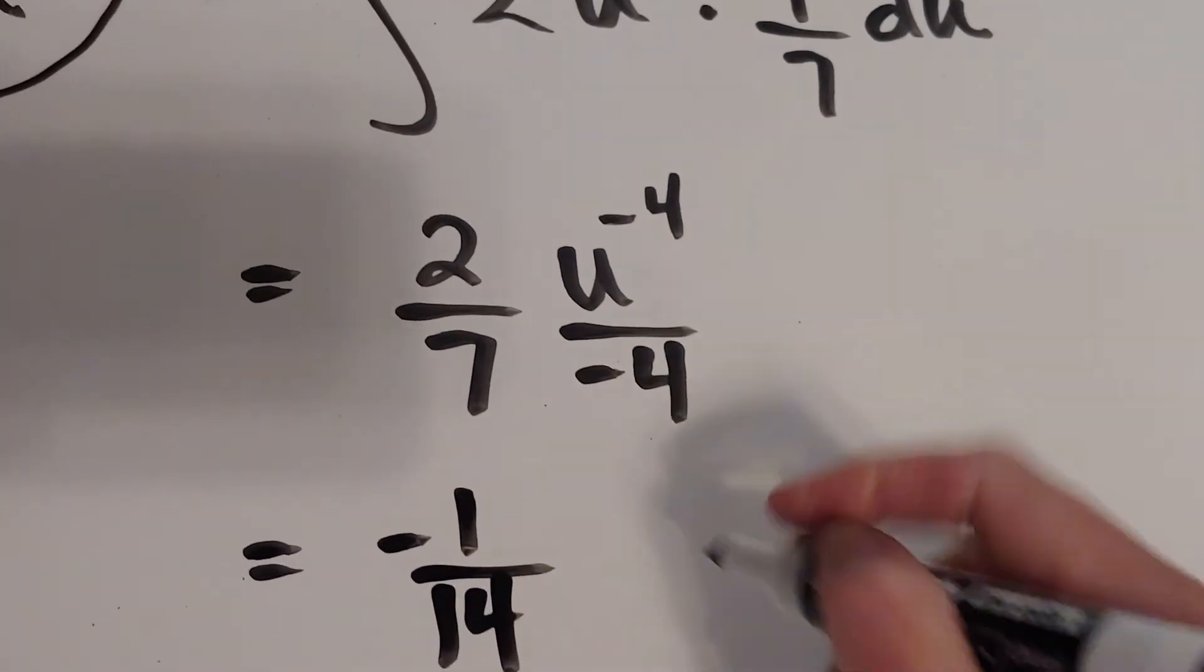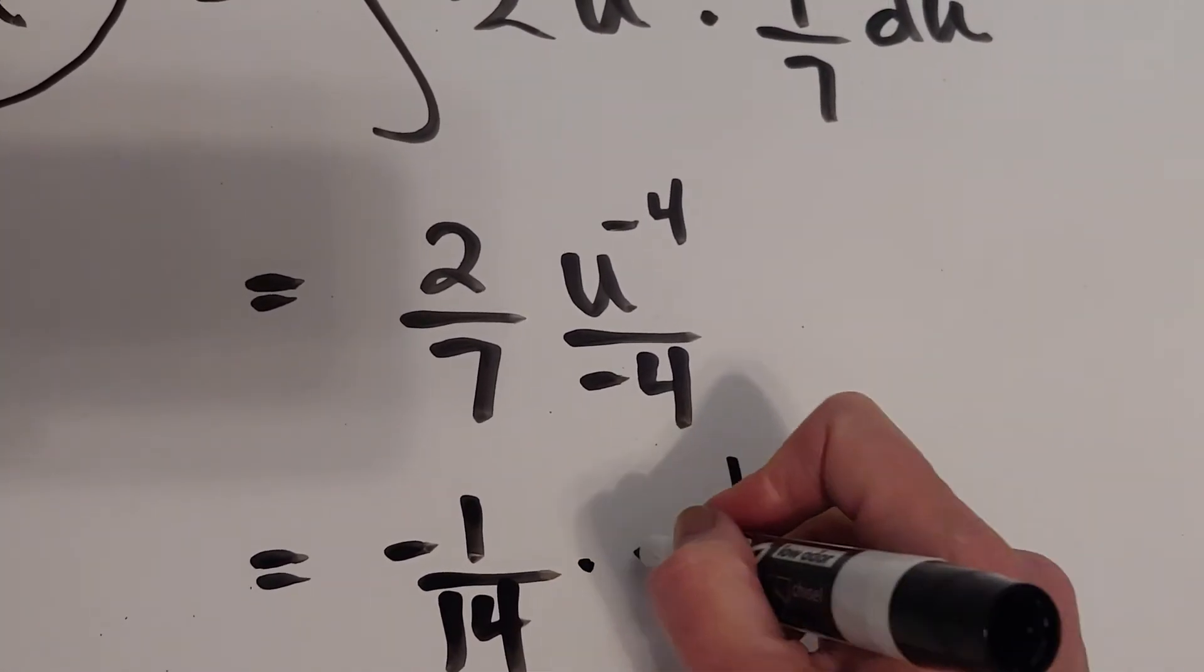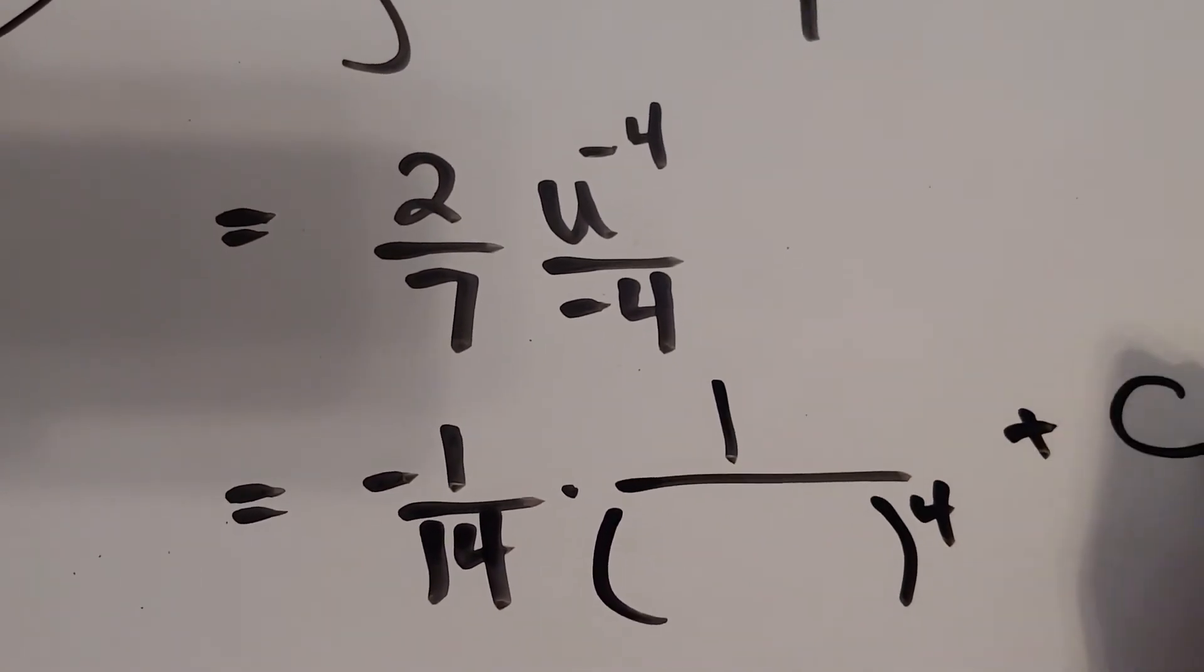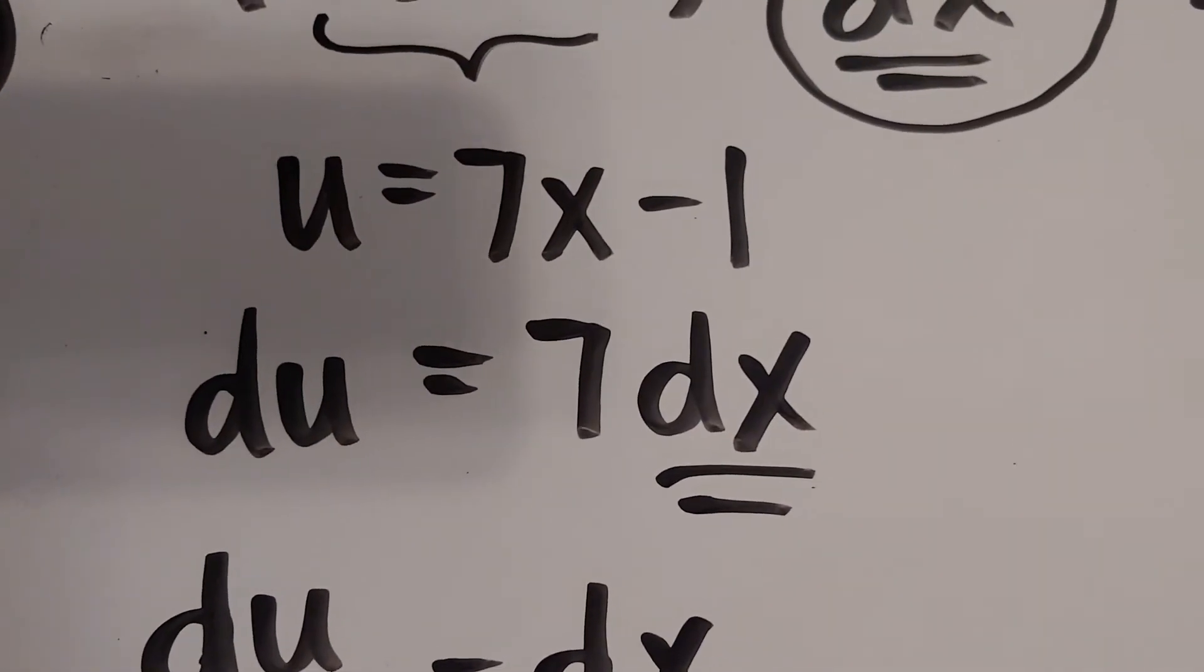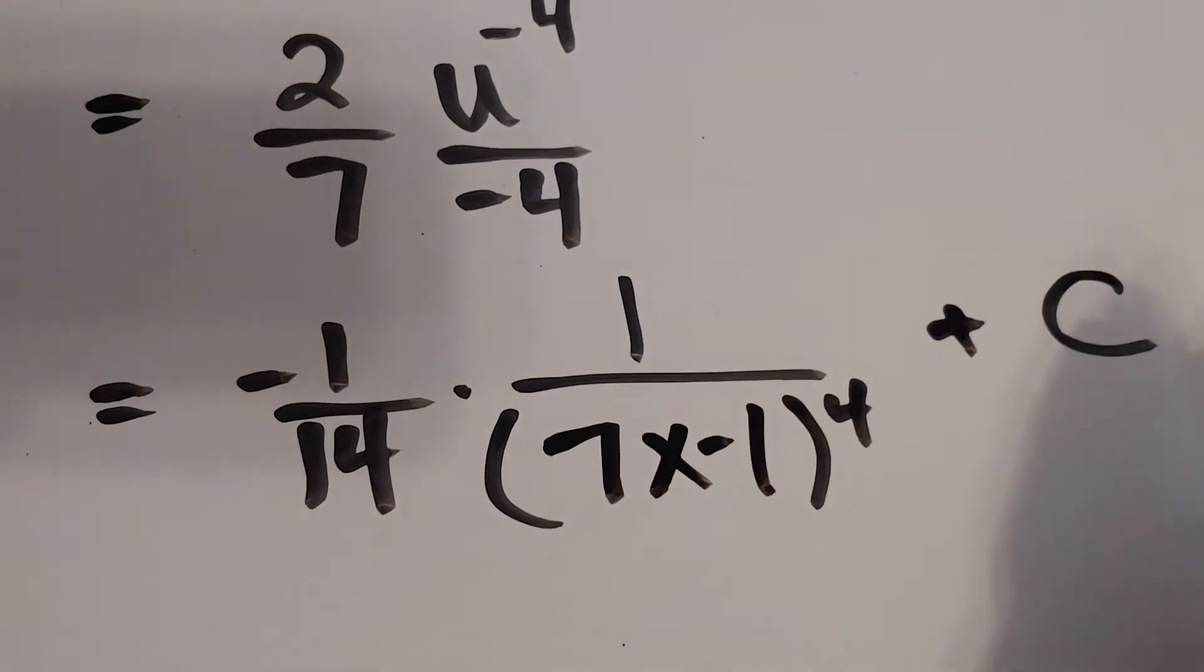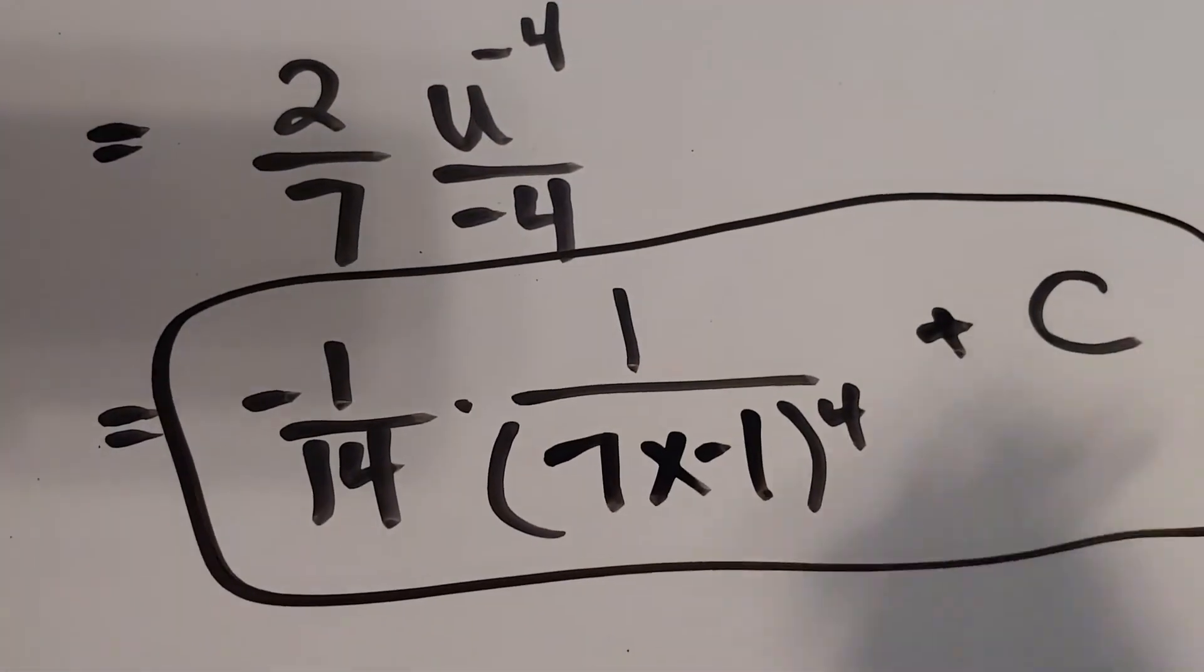And then u to the negative 4 would look like 1 over u to the 4. But I'm going to go ahead and get it ready to substitute back in. And u was 7x minus 1. So that's what's going to go in here, 7x minus 1. And there we go.